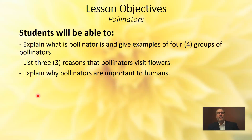We only have a few lesson objectives today — it's a relatively short list. By the end of this lesson you should be able to explain what a pollinator is and give examples of four groups of pollinators. In addition, you need to be able to list three reasons that pollinators visit flowers, and finally explain why pollinators are important to humans — sort of the 'why do we care.'